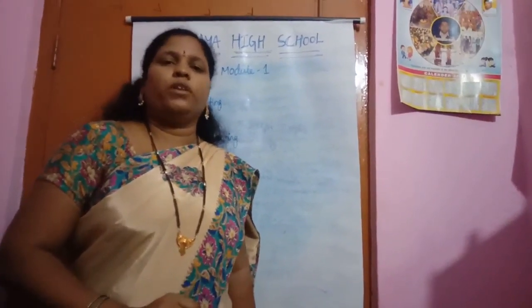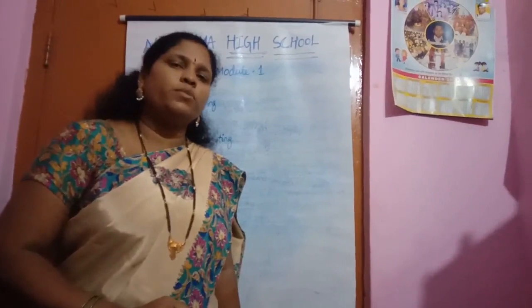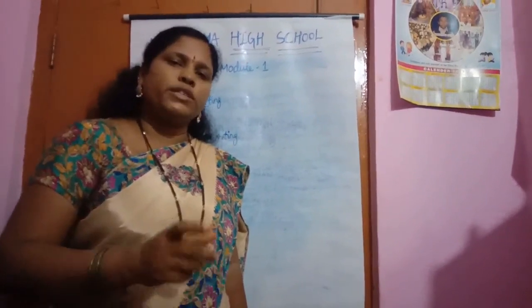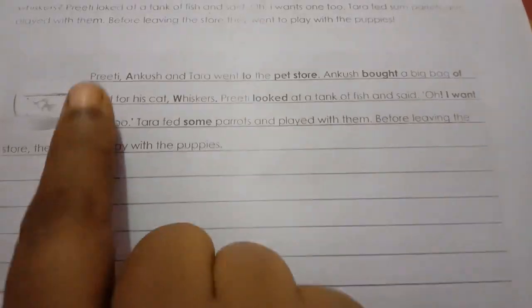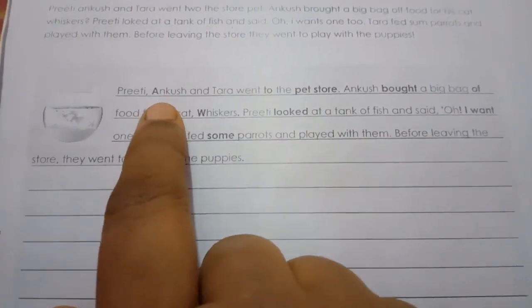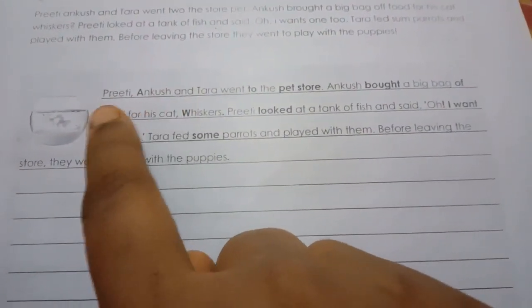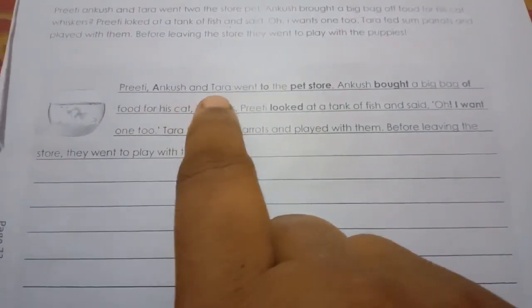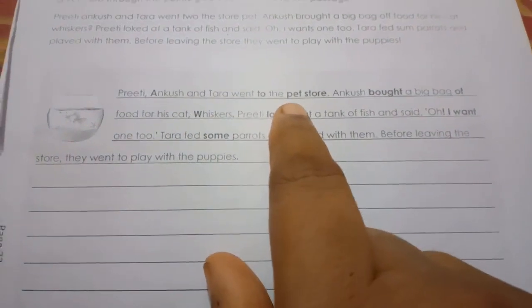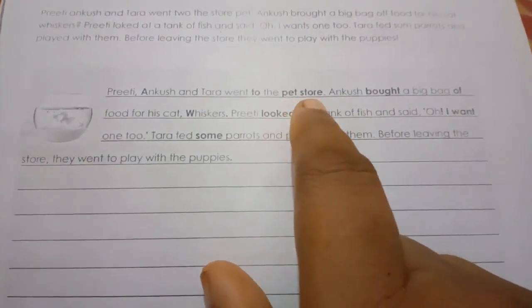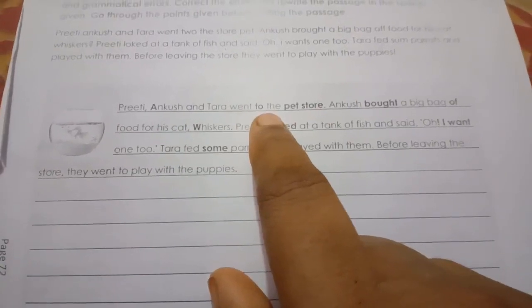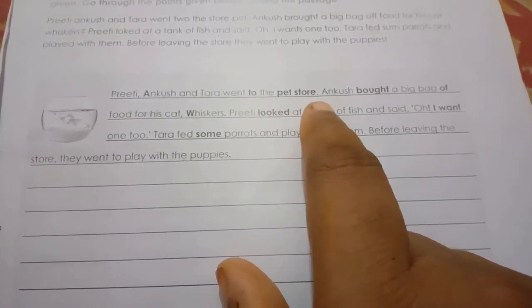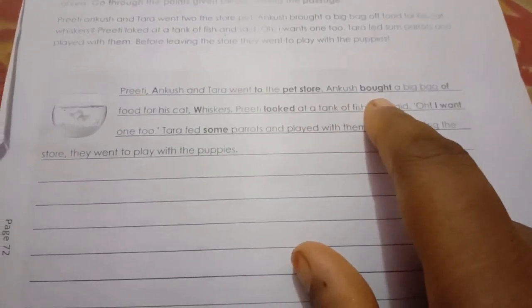Check the answers in your workbooks. Yesterday you wrote the formal writing, and now I will show you the correct answers. See: 'Prithi' — capital letter — comma — 'Ankush' — capital letter. Ankush and Tara went to the pet store. Here you should write 'pet store', and 'too' — they are at the pet store.